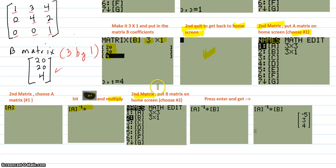And the multiply key to make it look like this. Then you go to second matrix. Put the B matrix on the home screen by choosing number 2. Then it makes it look like this. Press enter.